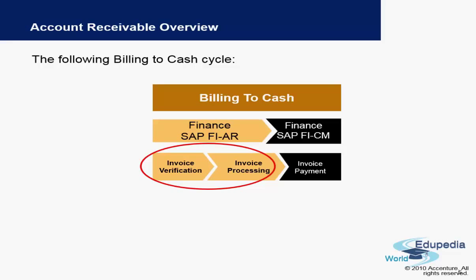Accounts receivable — this is the basic billing-to-cash cycle. From SAP SD, which is the sales and distribution module, there will be invoices which are posted for customers in the system. These invoices get converted into financial documents, which is called SAP FI AR accounts receivable. Once these documents are verified — called invoice verification — they are then processed, which is called invoice processing. These invoices are also called billing documents because they are for customers.